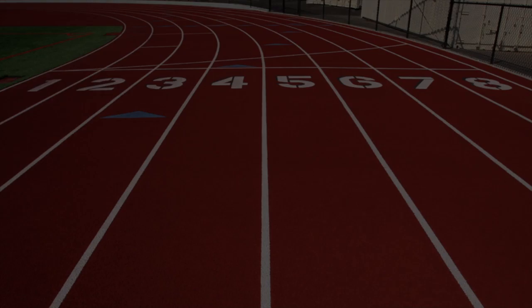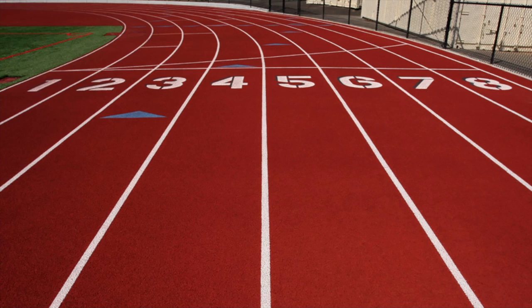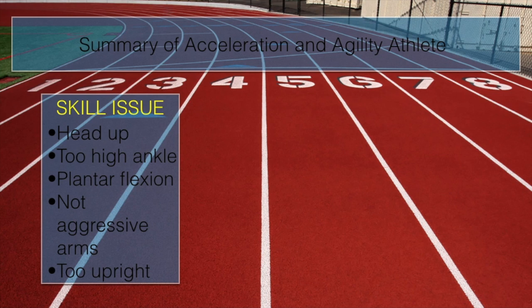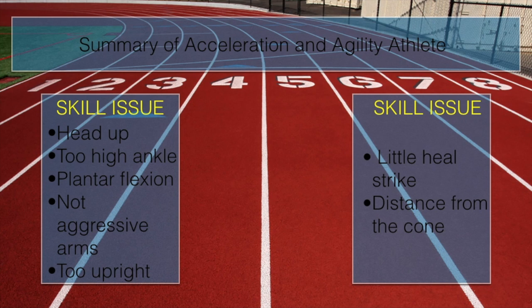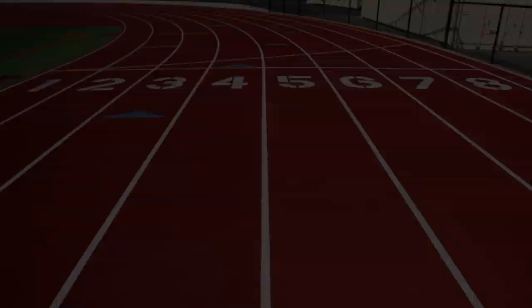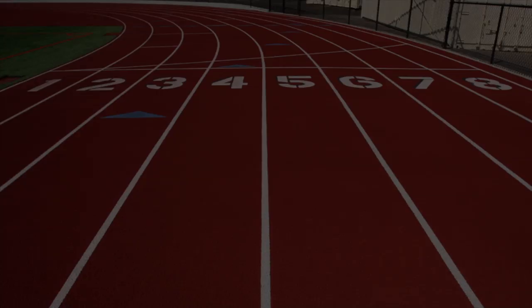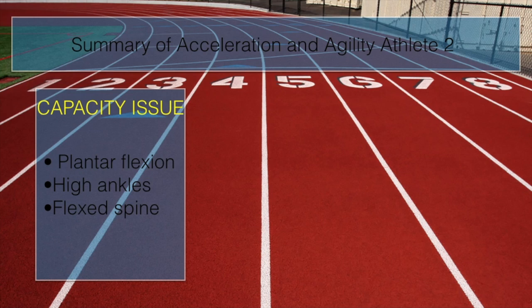To summarize: athlete 1's main acceleration issues were that his head and upper body were too upright, he had high ankle movement when pulling the leg forward, and he did not aggressively pull his arms back. For agility, the main issue was that he did not heel strike sufficiently and did not attack the corner aggressively enough, causing unnecessarily large turns. For athlete 2, the main acceleration issues were plantar flexion, high ankles, and a flexed spine, which seemed to result from low hip range of motion and lower body strength. For agility, the main issue was heel strike — especially on the right foot — where he did not have sufficient eccentric strength on that side.